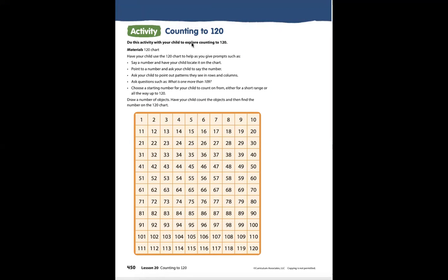Use this activity with your child to explore counting to 120. Materials: 120 chart. Have your child use the 120 chart to help as you give prompts — such as say a number and have your child locate it on the chart, point to a number and ask your child to say the number, or ask your child to point out patterns they see in rows and columns.